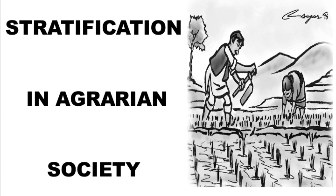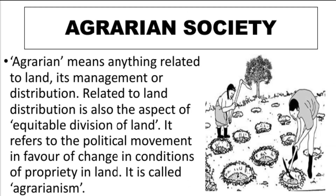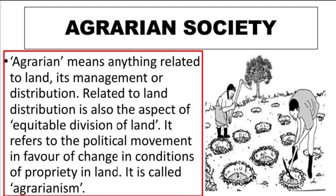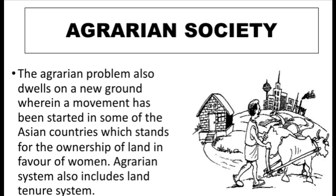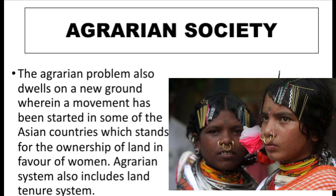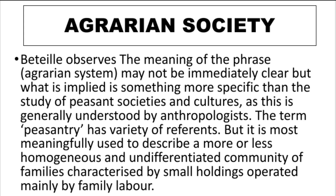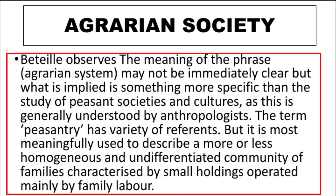First of all, let's know what agrarian social structure is. The dictionary meaning of 'agrarian' relates to anything concerning the management and distribution of land. Thus the agrarian social structure refers to a political movement or change in land property, which we call agrarianism. Agrarian movements are starting in some Asian countries, mainly about the ownership of women on land.